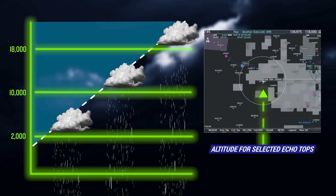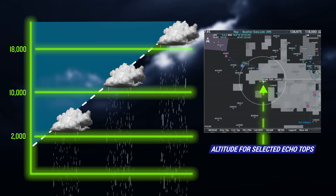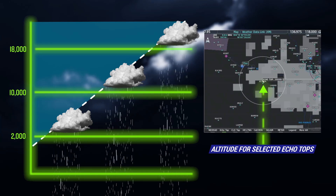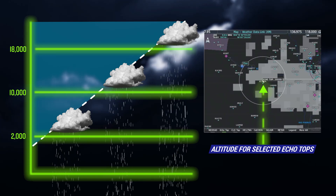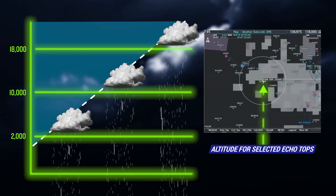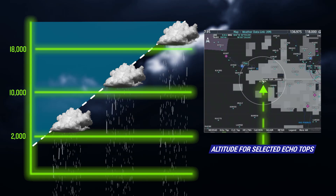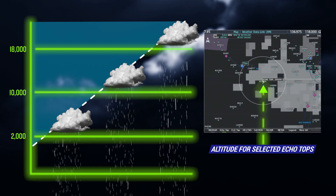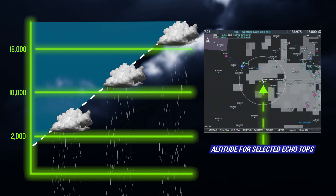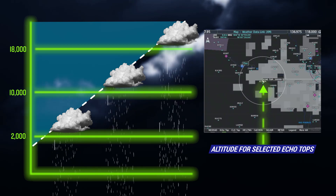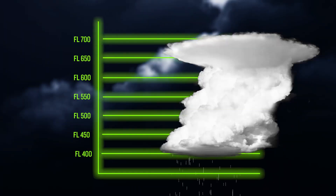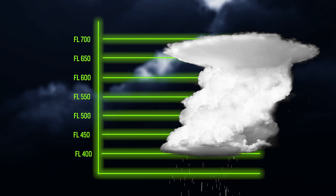Echo tops are derived from NEXRAD radar returns and indicate the highest altitude at which precipitation is sensed. The Echo Tops product shows both the location and elevation of the highest radar echo. The highest radar echo does not indicate the top of a storm or clouds; rather, it indicates the highest altitude at which precipitation is detected. Echo tops at or above the altitude you select are displayed in 5,000-foot increments.